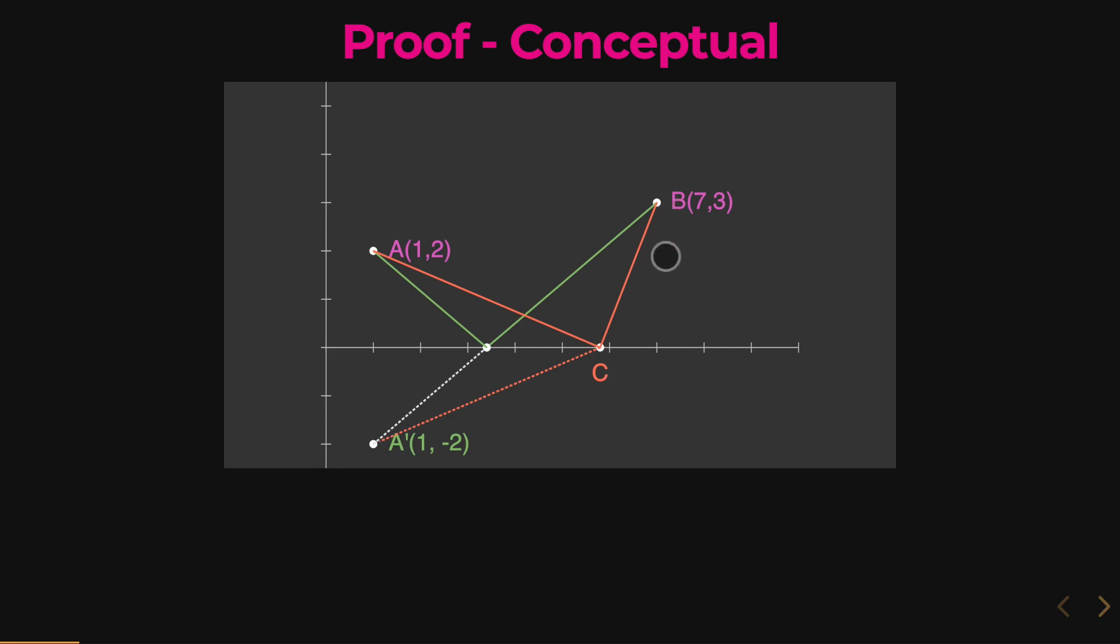A' to c plus B to c is going to be larger, or you can say longer, than A' to B. And so we know that this distance is longer than this, we can confirm that this line, A' to B, is our shortest.